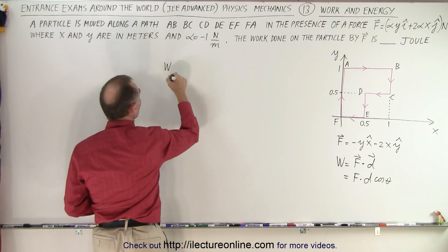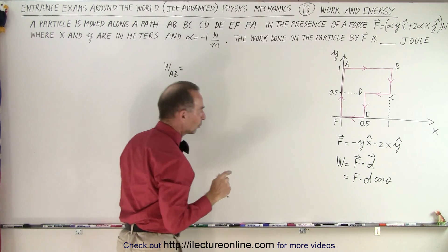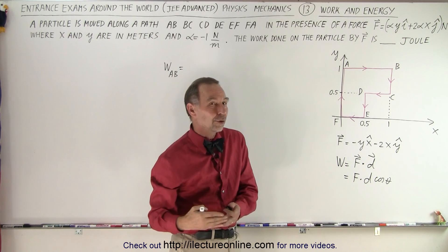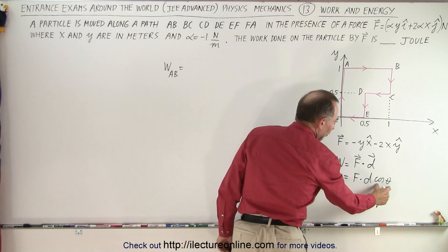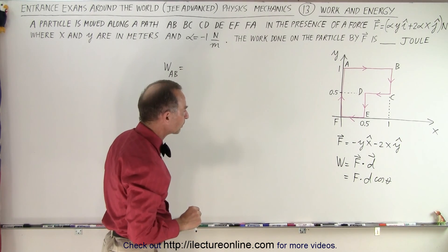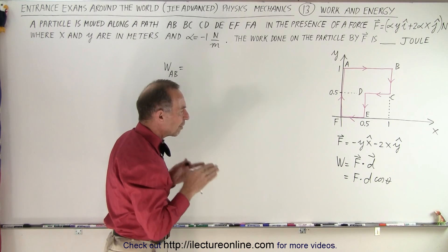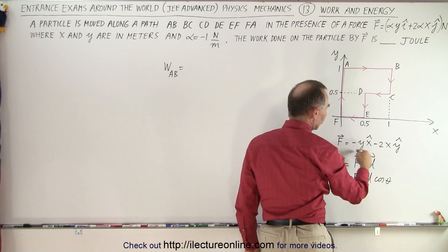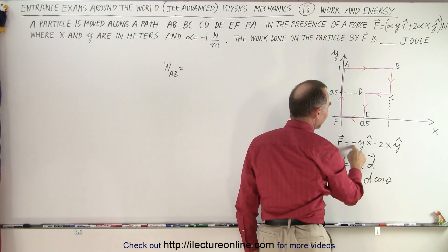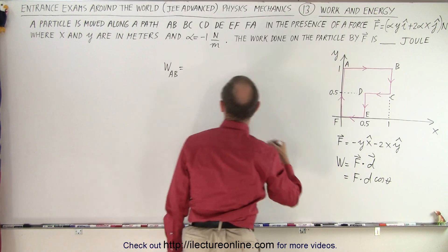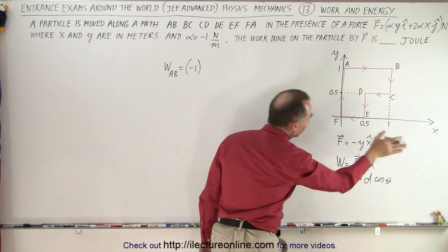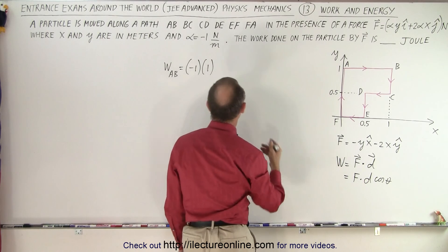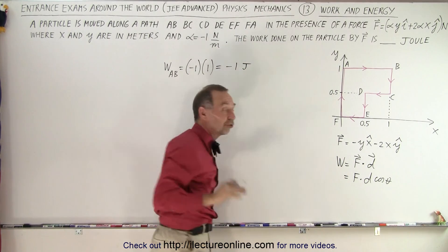Now we calculate the work done traveling from A to B. We multiply the force times the displacement. The cosine will be either cos(0°)=1 or cos(90°)=0, so we select the relevant component. Traveling in the X direction, the X component of force is minus the Y value. The Y value at that point is 1, so the force is −1. The displacement is positive from 0 to 1, so +1. That gives negative 1 joule of work done going from A to B.